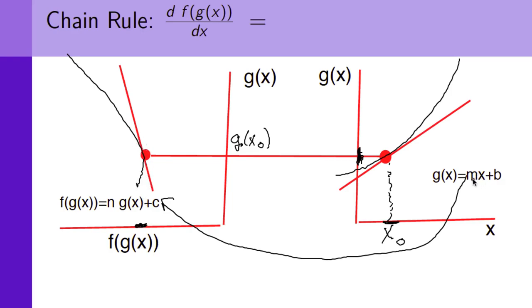Now, what is m? m is the slope of the tangent line. So, m is just dg by dx evaluated at the point x naught.